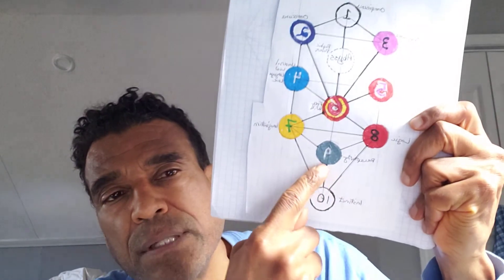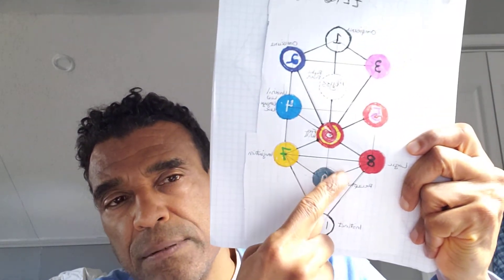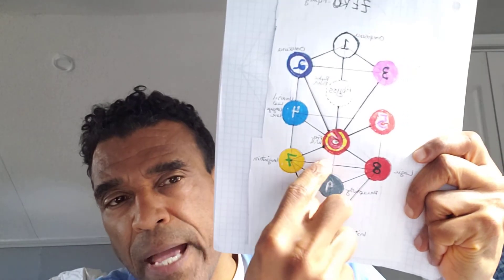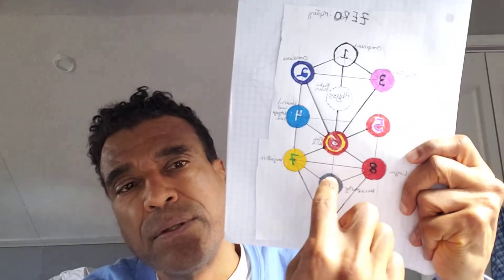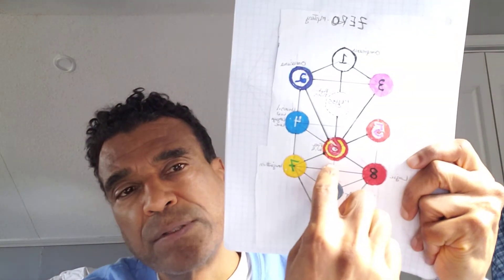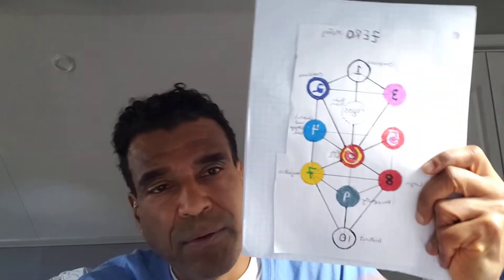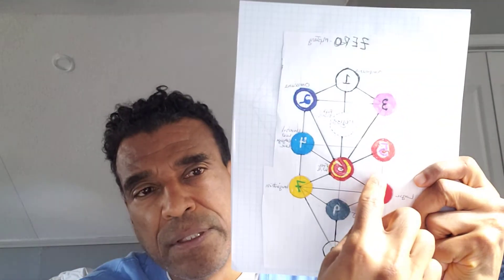Basically what I did is I took each one of these spheres — for example, sphere number nine — and applied the whole tree to that one sphere. Then I applied the whole tree to the seventh sphere, and then to the eighth sphere. That's essentially how it works.